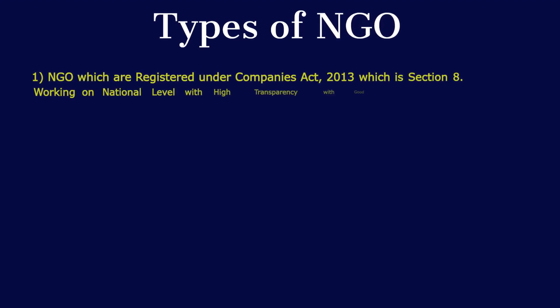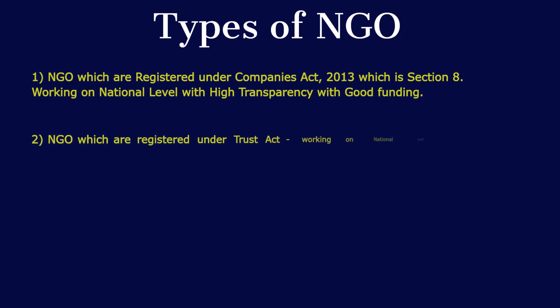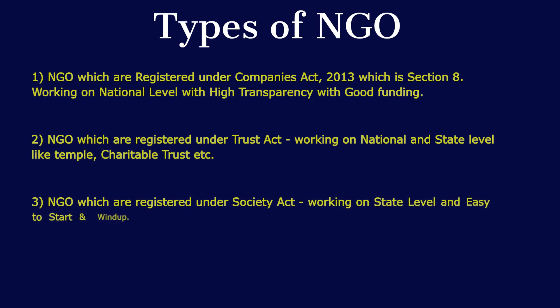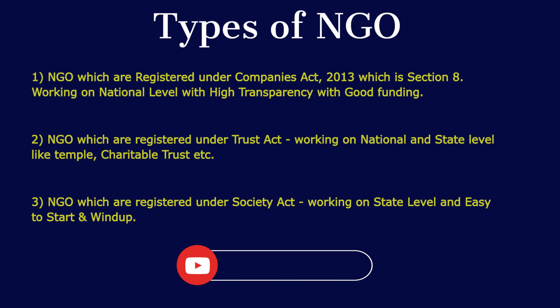There are three types of NGOs. Type 1: NGOs registered under the Companies Act 2013 (Section 8), operating at the national level with high transparency and good funding. Type 2: NGOs registered under the Trust Act, working at national and state levels, like temple or charitable trusts. Type 3: NGOs registered under the Society Act, working at the state level and easy to start and wind up.